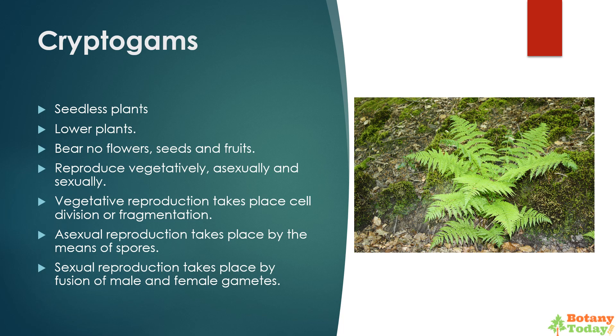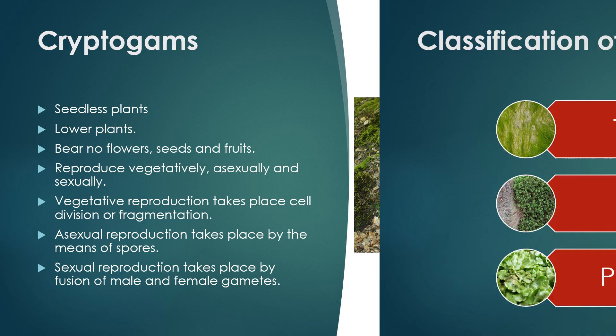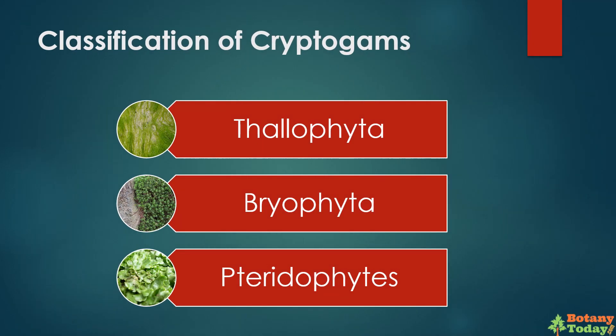Sexual reproduction takes place by fusion of male and female gametes. Cryptogames are divided into three groups: thallophyta, bryophyta, and pteridophyta, depending upon whether they have well-differentiated plant body or not. Thallophyta and bryophyta have undifferentiated plant body and no vascular tissues, while pteridophytes have differentiated plant body with vascular tissues.